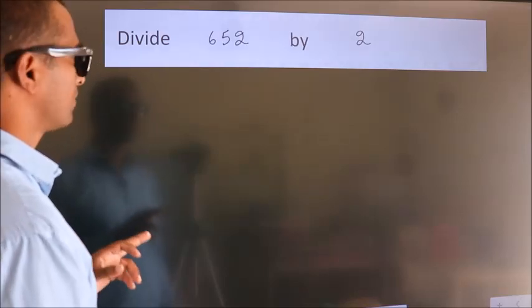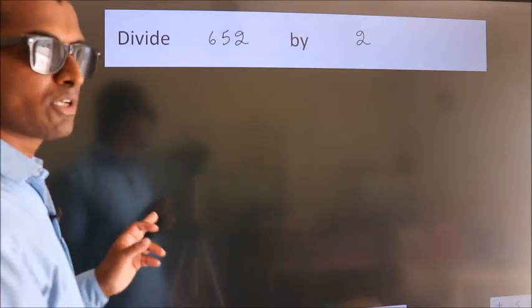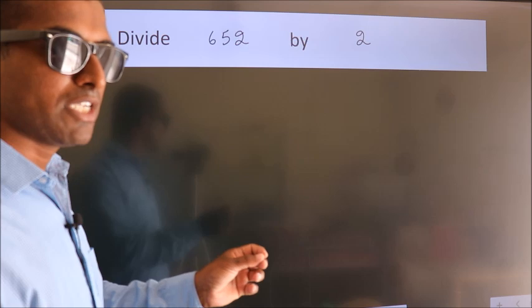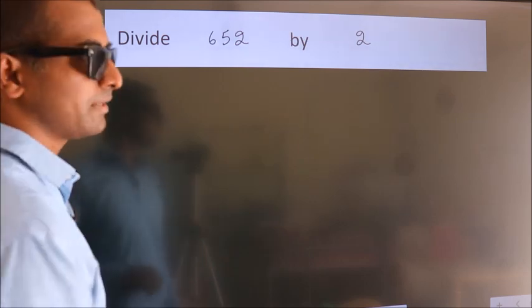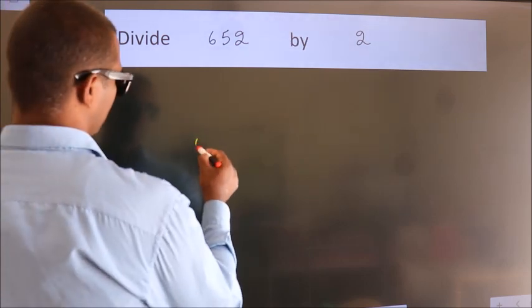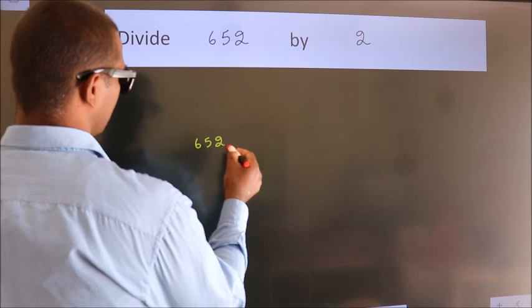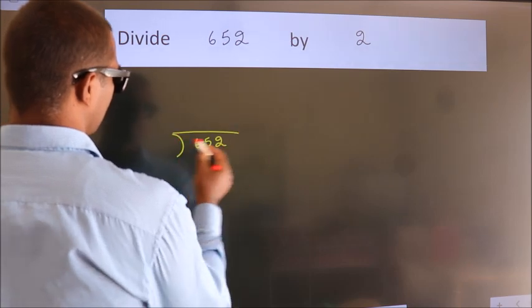Divide 652 by 2. To do this division, we should frame it in this way: 652 here, 2 here.